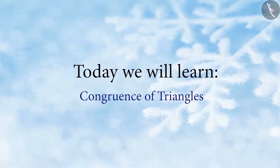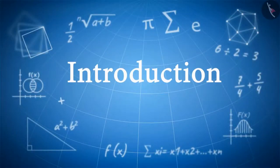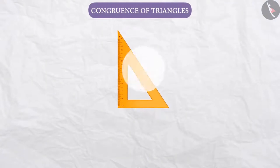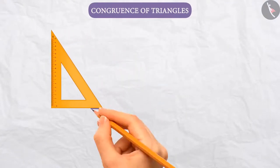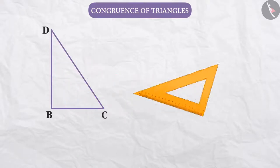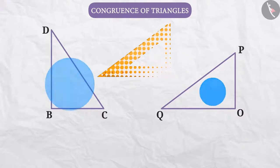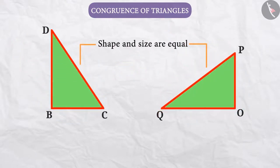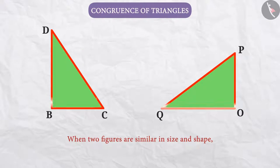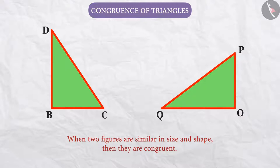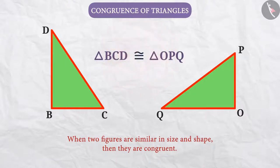Today, we will learn congruence of triangles. Suppose we draw two triangles, triangle BCD and triangle OPQ, from the same set square. Since both are drawn by the same set square, we can say that their shape and size are equal. We know that when two figures are similar in size and shape, then they are congruent. In this way, triangle BCD and triangle OPQ are congruent.